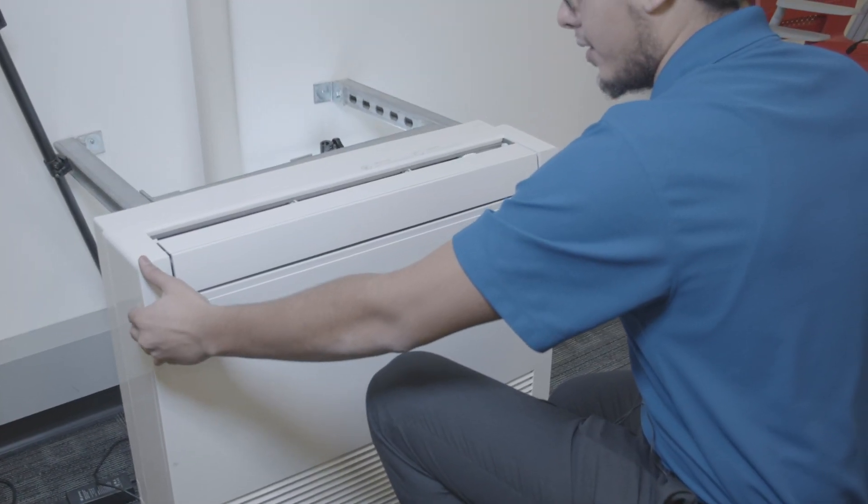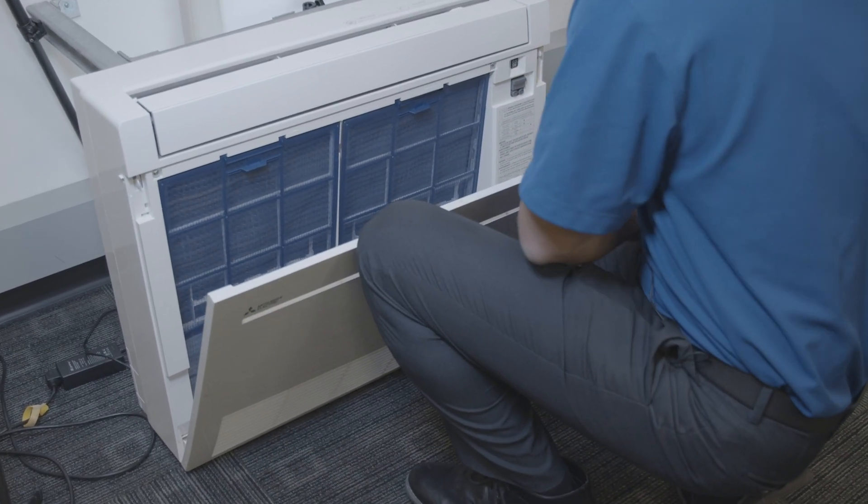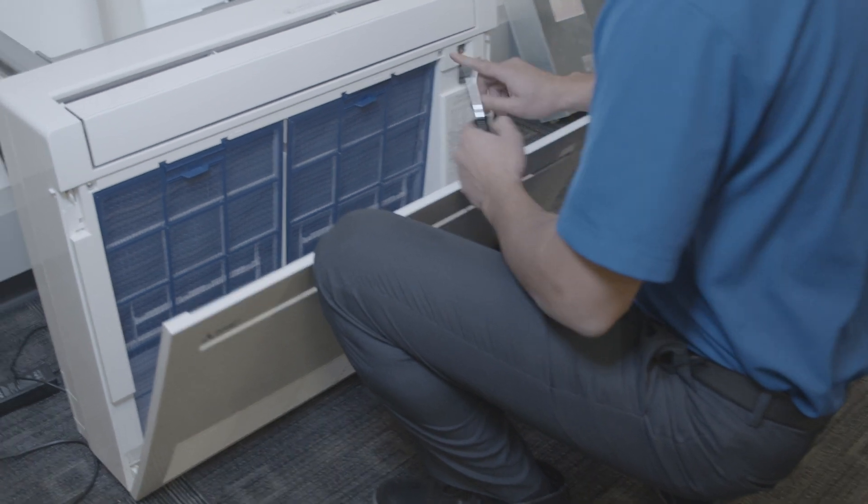Let's get started by removing the front panel assembly. First, open the front cabinet door which is used to access the filter.